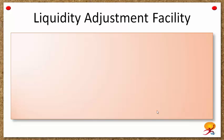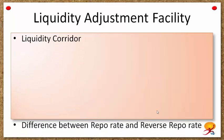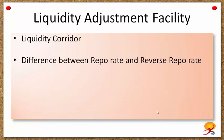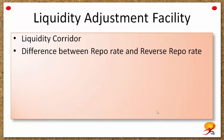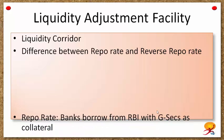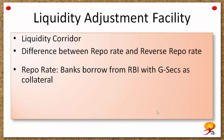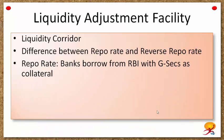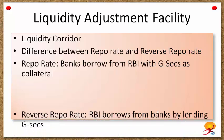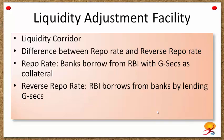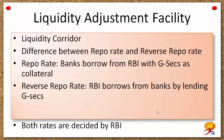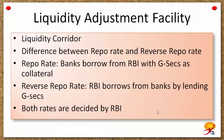The Liquidity Adjustment Facility is a liquidity corridor created by the difference between the repo rate and the reverse repo rate. The repo rate is the rate at which banks borrow from RBI with government securities as collateral, and the reverse repo rate is the rate at which RBI borrows from commercial banks by lending government securities. Both these rates are decided by RBI itself.